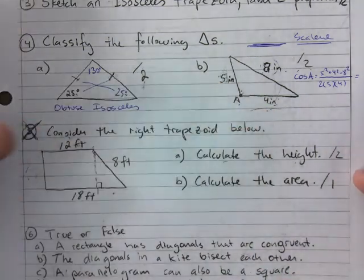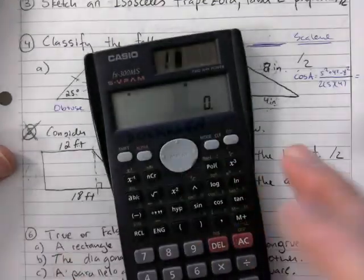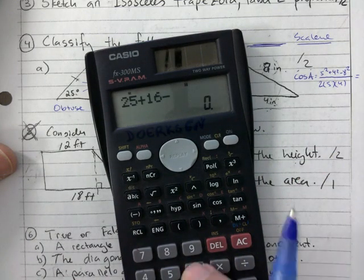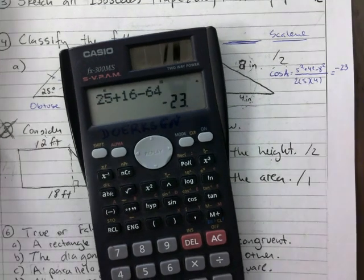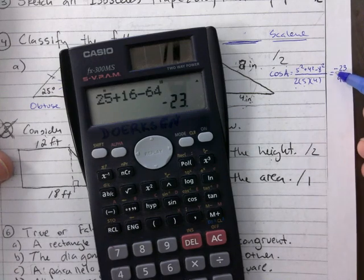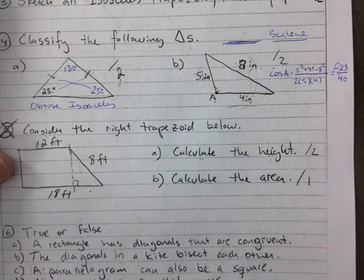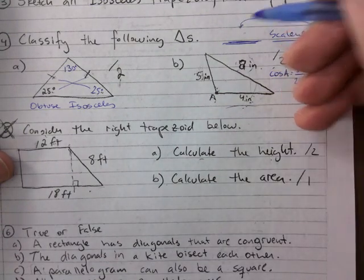I bet that's a negative. So that's 25 + 16 − 64, which is negative 23. And 2 × 5 = 10 × 4 = 40. In this unit, if you just stop there and say 'obtuse,' that's acceptable.